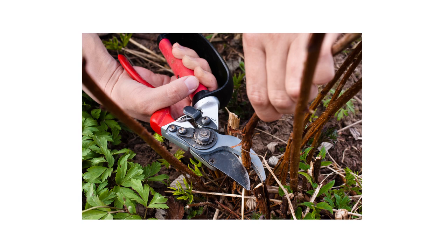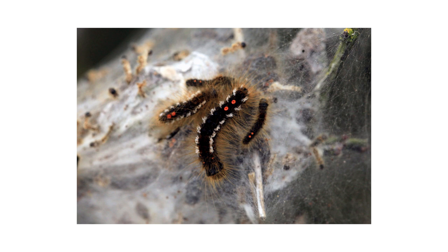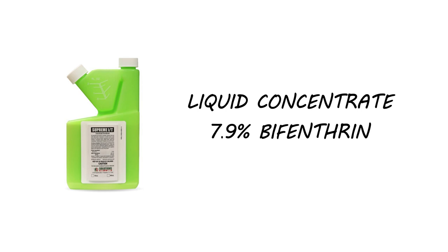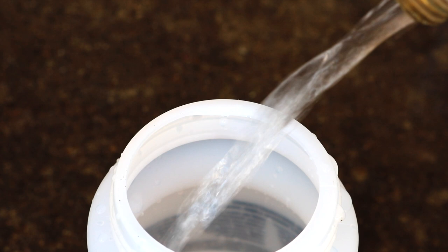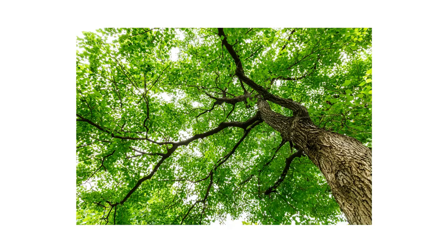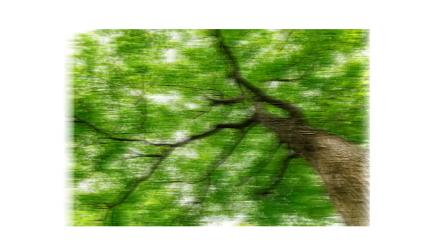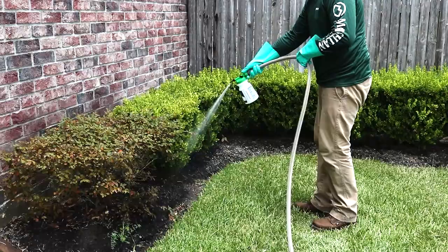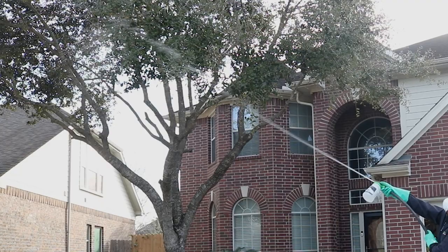To get rid of browntail moth caterpillars, you'll need to use an insecticide with long-term residual protection like Supreme IT. Supreme IT is a liquid insecticide concentrate made with 7.9% bifenthrin, so it will need to be mixed with water before application. We recommend one-eighth to one-fourth of a fluid ounce of product per one gallon of spray solution to apply over 1,000 square feet of treatment area. Since browntail moth caterpillars are typically found in elevated spaces, we recommend you mix and apply this solution with a 20-gallon hose-end sprayer. Once your solution is mixed, spray the leaves on all foliage and trees on your property, being sure to spray underneath the leaves as well. To spray elevated areas, remove the spray tip to produce a long-reaching stream.